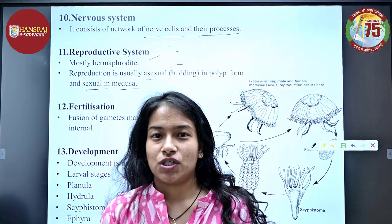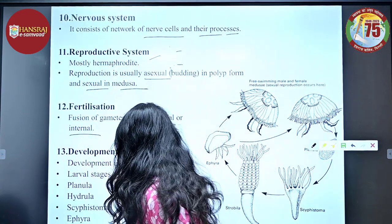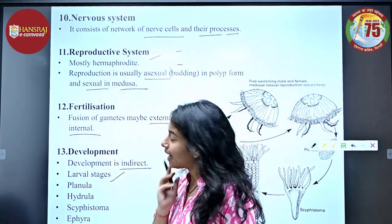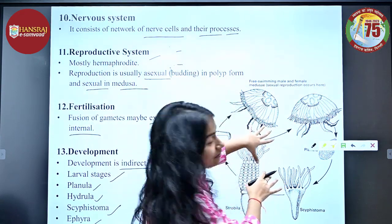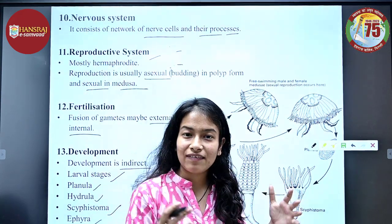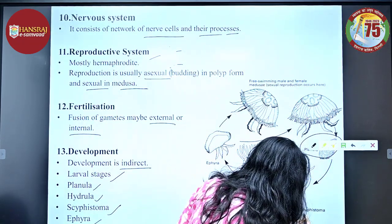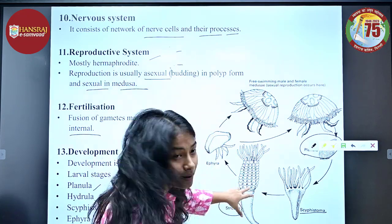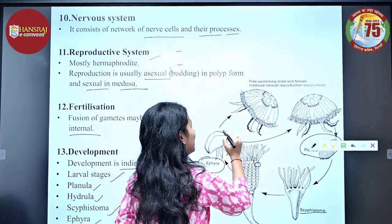Fertilization — the fusion of gametes — may be internal or external. Development is indirect, meaning larval stages are present, such as planula larva, hydrula larva, scyphistoma, and ephyra. Free-swimming male and female medusae produce sperm and egg, which fertilize to form planula larva; this grows into a scyphistoma attached to the substratum, then forms a strobila with buds that separate out as ephyra, which grow into the adult.